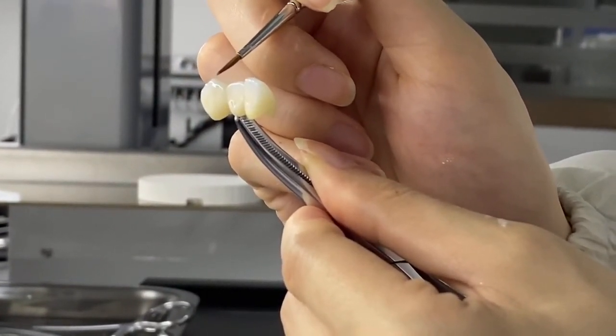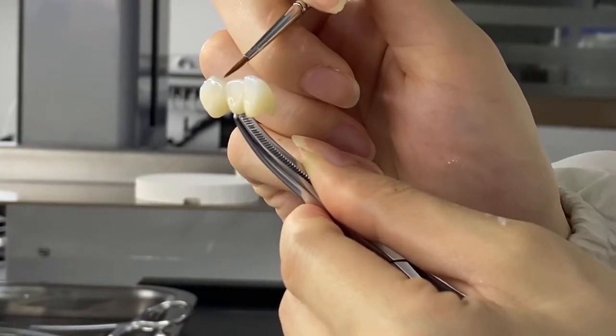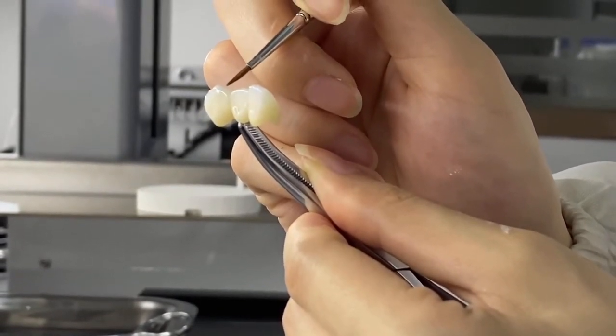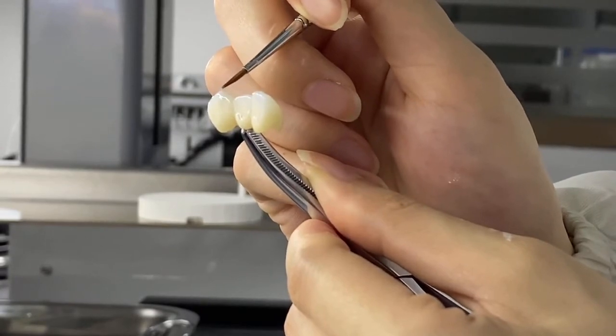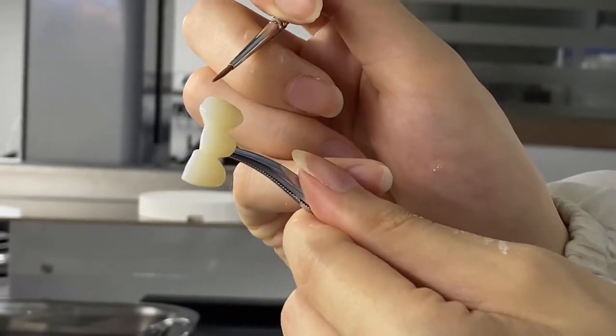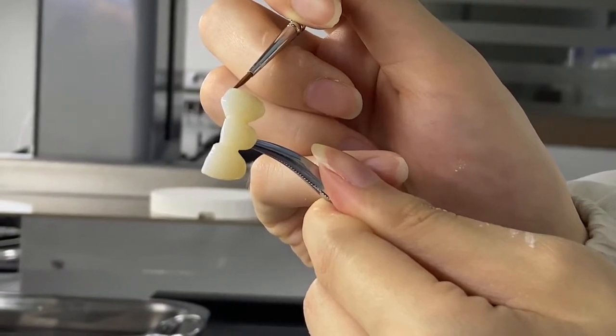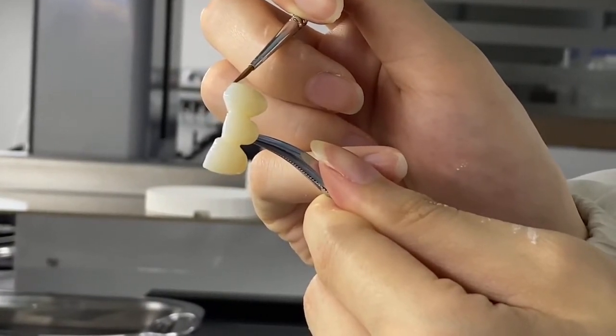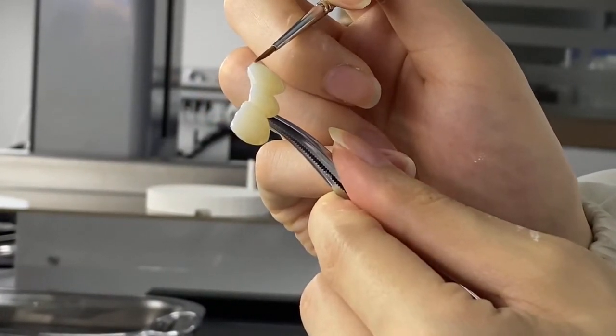For more details please visit bloomden.com 3D Pro multi-layer zirconia block or WhatsApp to Bloomden 86 131 3511 4919.